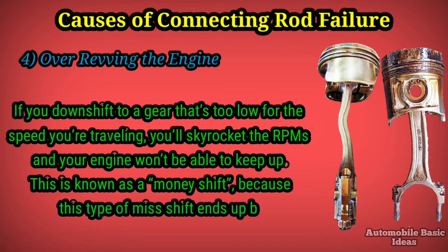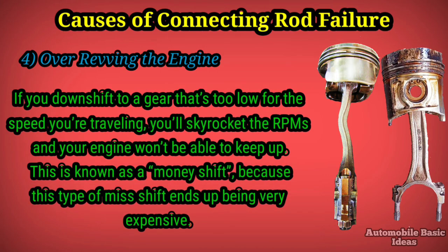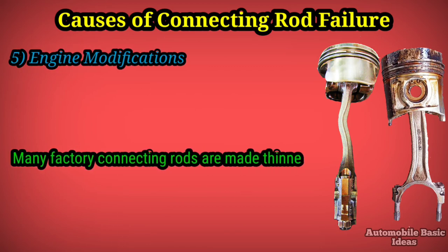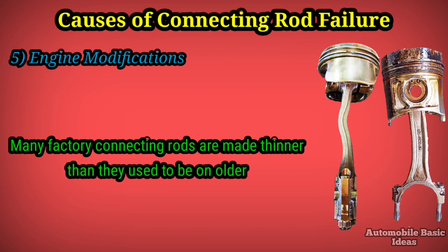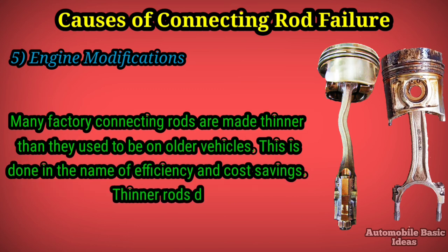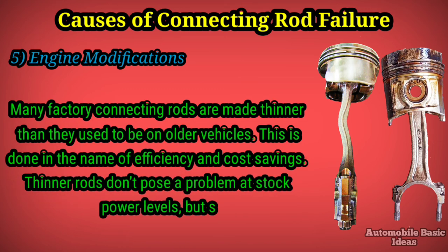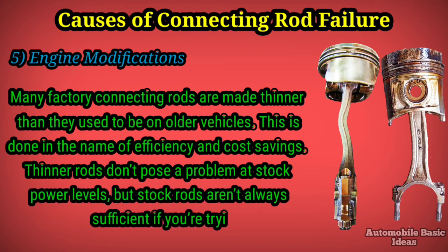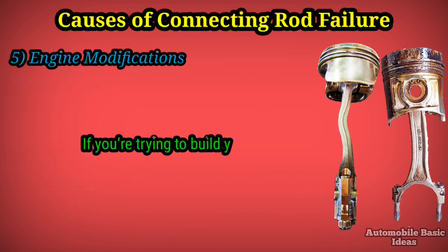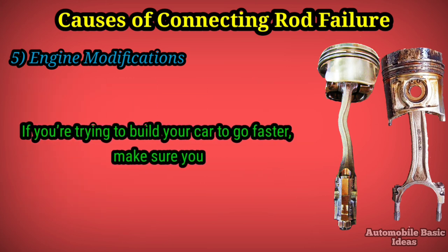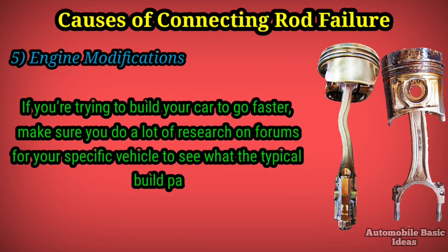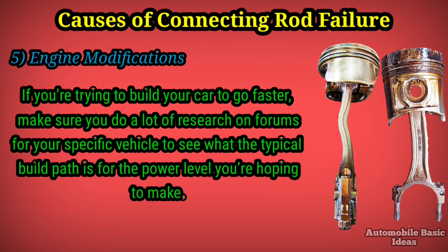Five: engine modifications. Many factory connecting rods are made thinner than they used to be on older vehicles, done in the name of efficiency and cost savings. Thinner rods don't pose a problem at stock power levels, but stock rods aren't always sufficient if you're trying to make a lot more power. If you're building your car to go faster, make sure you do a lot of research on forums for your specific vehicle to see what the typical build path is for the power level you're hoping to make.